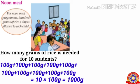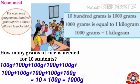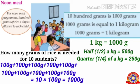Children, here you remember one thing: 10 hundred grams is 1000 grams. 1000 grams is equal to 1 kilogram. That is, 1 kilogram is equal to 1000 grams. So half a kilogram is equal to 500 grams. Quarter of a kilogram is equal to 250 grams. You should keep this in your mind.